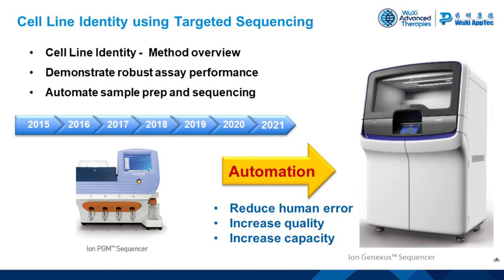I will give you an overview of the targeted sequencing approach we used to develop the identity test, then present a study to demonstrate the robustness of the method. We've offered this test since 2015 using the Ion Torrent PGM sequencer. While this instrument has been a workhorse for us, sample processing requires a complex manual workflow. Recently, we've automated the sample prep on the Ion Torrent GeneXus integrated sequencer, which has reduced human error and increased the quality of the assay.